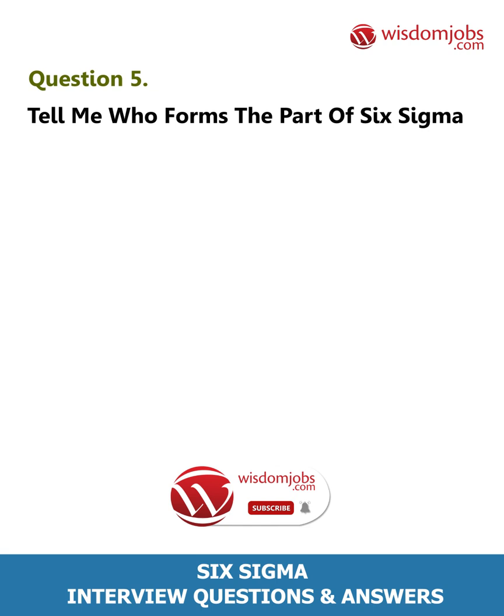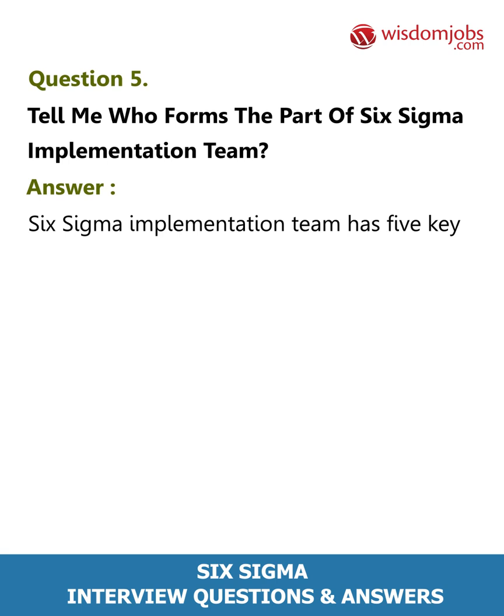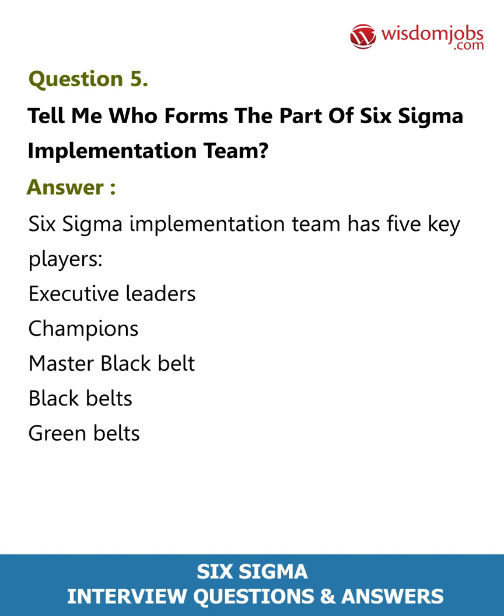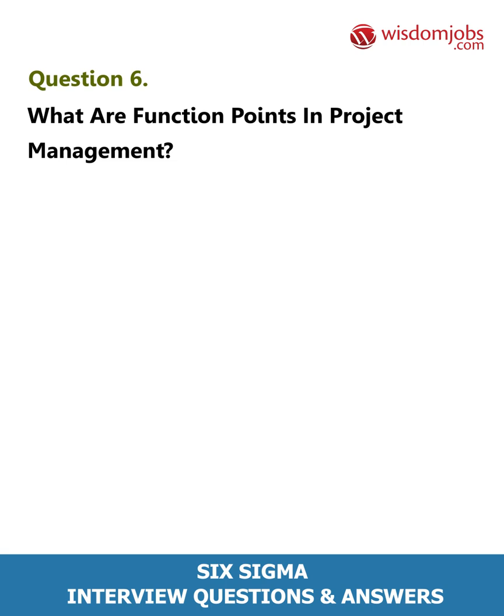Question 5: Tell me who forms part of the Six Sigma implementation team. Answer: The Six Sigma implementation team has five key players: Executive Leaders, Champions, Master Black Belts, Black Belts, and Green Belts.